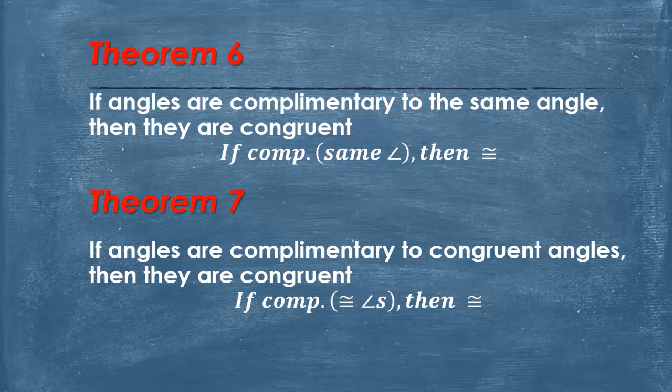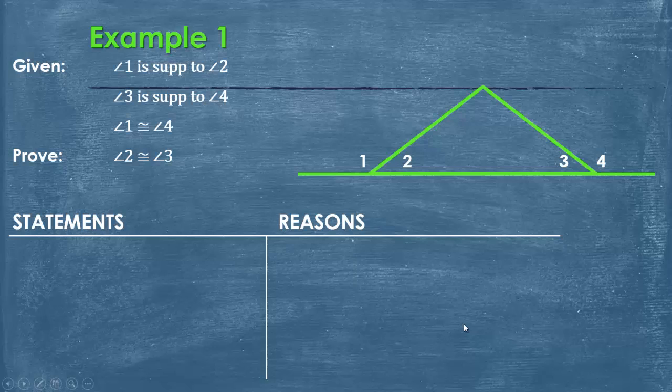So you write it like this right here. So these are the two that you can use in proofs. You cannot use just theorem 6 and theorem 7 as a reason. You can't just write theorem 6 and theorem 7. You must write these. Be aware of that. So let's take a look at some examples of how you'd use this in a proof.